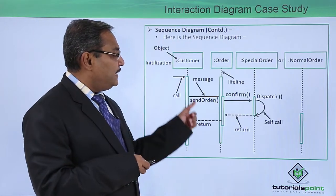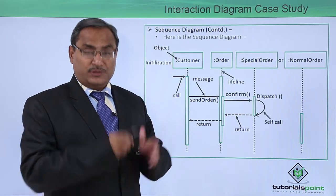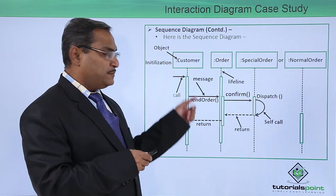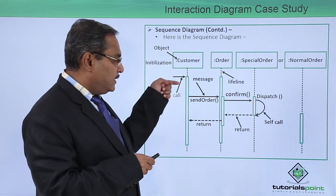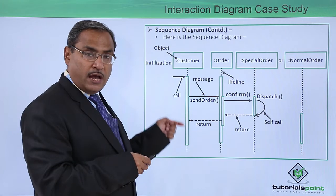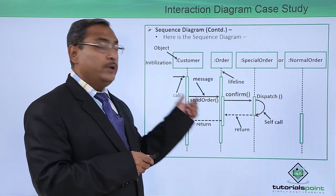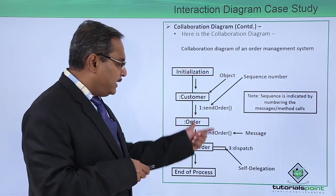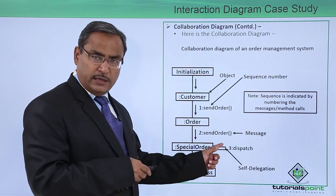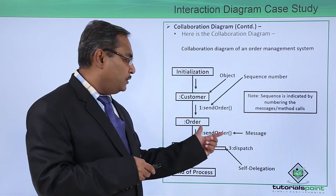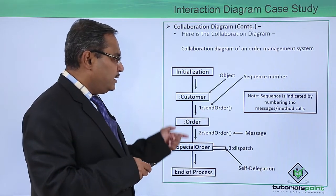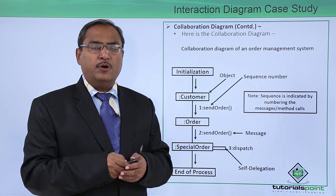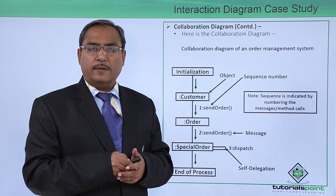That numbering was absent in the sequence diagram — that is the basic difference between the sequence diagram and the collaboration diagram. In the sequence diagram we get the idea of what time and which method is to be invoked. In the collaboration diagram we get the ordering through numbering before the messages, depicting the collaboration diagram of our case study, the order management system.